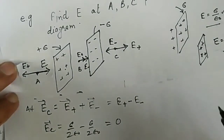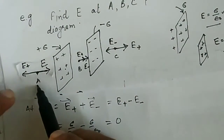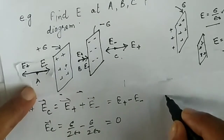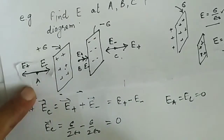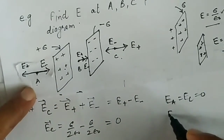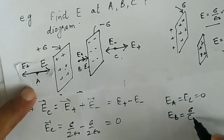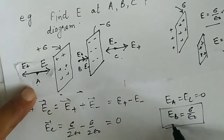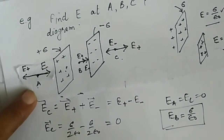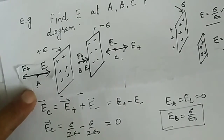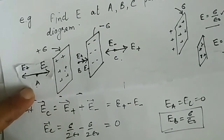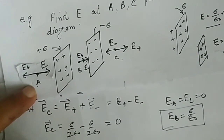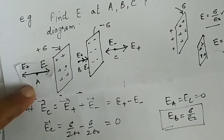In summary, the electric field at point A and at point C is equal to zero, while the electric field at point B — that is, between the sheets — is equal to Sigma / epsilon_0. Remember: whenever two equal and opposite charge sheets are placed together, the electric field between the sheets is Sigma / epsilon_0, and the electric field on the outside on both the left side and right side is equal to zero.